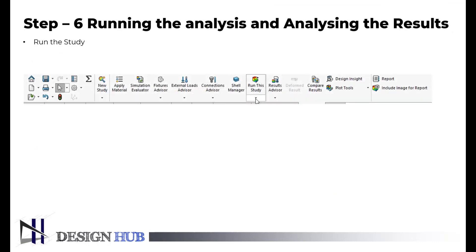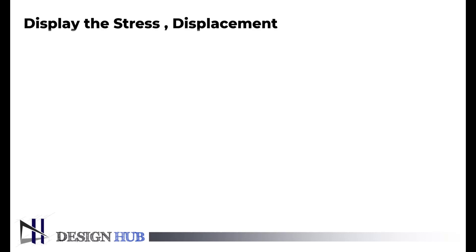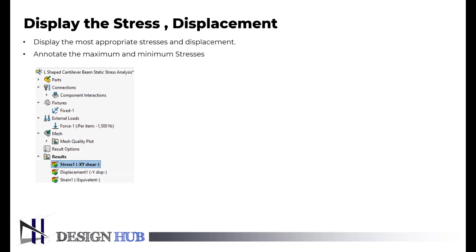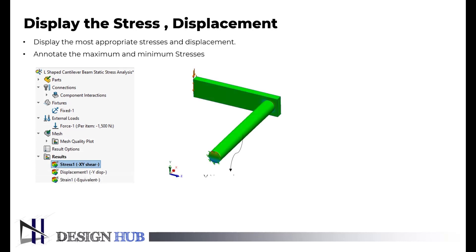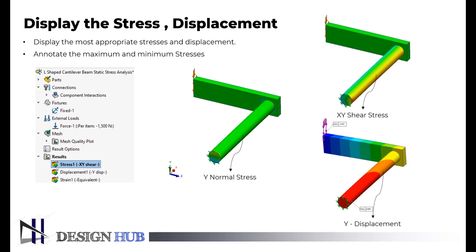The sixth step is to run the study after all the essential steps are performed. We will plot the graph of required stress. Now we will display and analyze the results. This exercise investigates displacements and stress at various locations on the model. We will also plot the graph for specific stresses like Y normal stress, XY shear stress, and Y displacement.